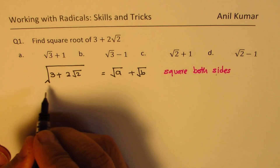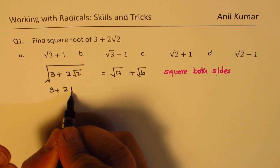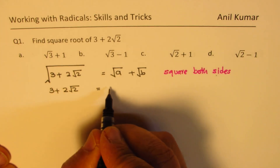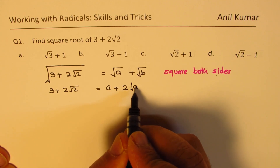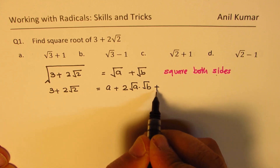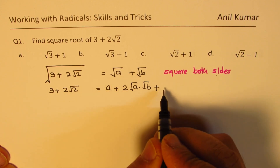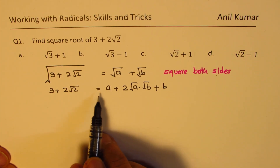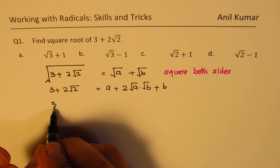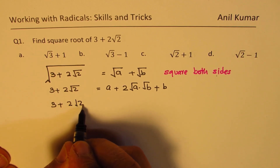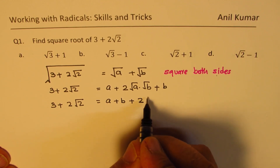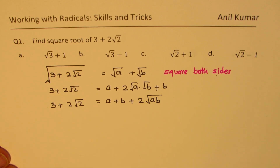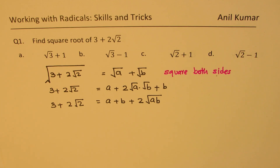If we square both sides, we get 3 plus 2 square root 2 on the left side. On the right side we get a plus 2 times square root of a times square root of b plus b. We can rearrange this and write it as 3 plus 2 square root of 2 equals a plus b plus 2 times square root of ab.